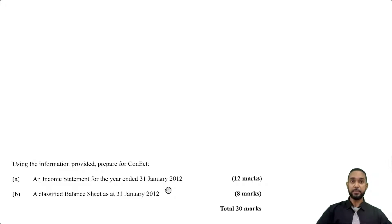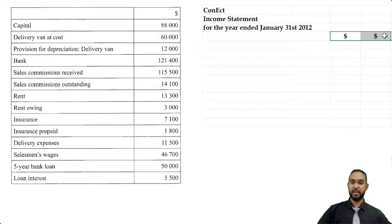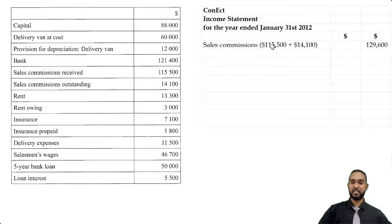Let's get that income statement started. As per usual, please remember to head up: name of the entity, name of the statement, period to which it applies, and put your currency signs. The first thing we're going to put is the revenue — sales commissions. We're adding the 115,500 and the 14,100 to get 129,600. Why are we adding these two figures? The sales commissions received was 115,500, and we had sales commissions outstanding or accrued of 14,100. We add accrued balances onto the cashbook or received figures. There were no other revenues, so we go straight to the expenses section.